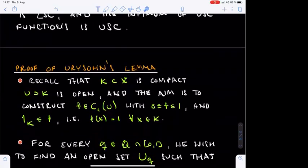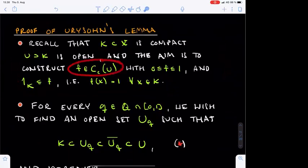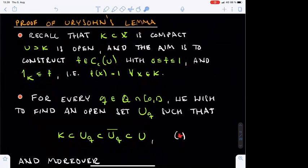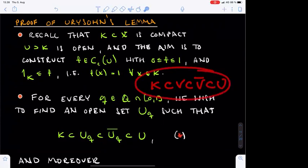We then begin the proof of Urysohn's lemma, listing the properties of the function F we need to achieve. Before defining F, we will apply Lemma 2.8 from the previous lecture countably many times. This lemma states that, given the sets K and U as in Urysohn's lemma, we can find an open set V which contains K and whose compact closure is contained in U.